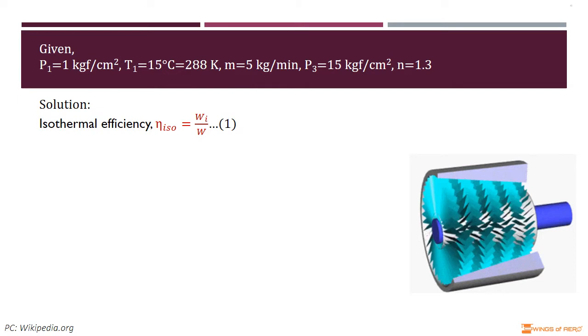Then write isothermal efficiency: η_ISO = W_I / W, where W_I is the isothermal work done and W is the work done in compression.